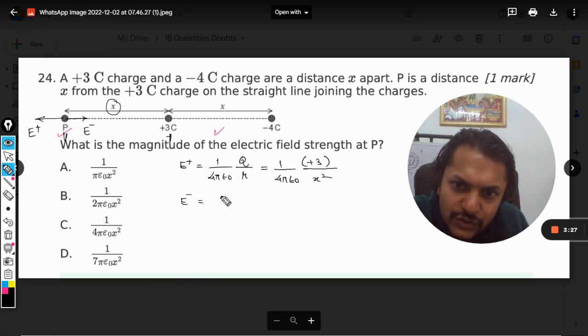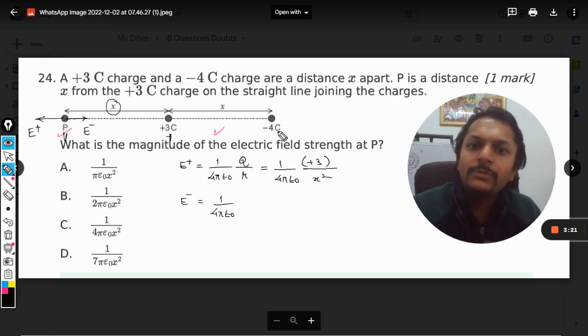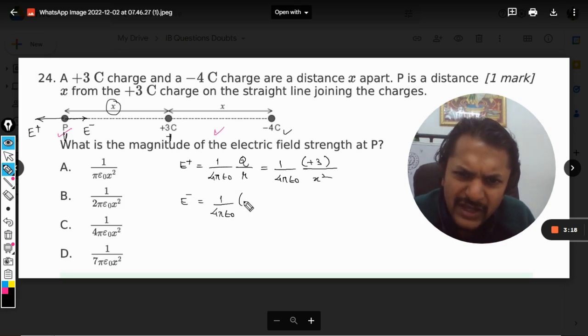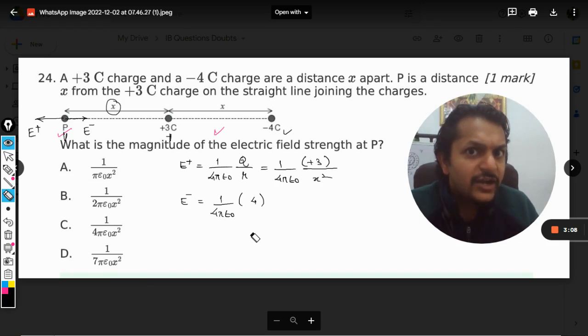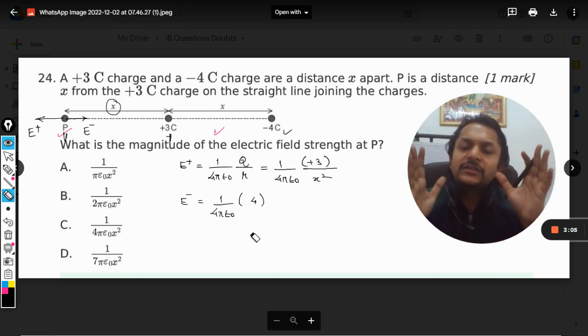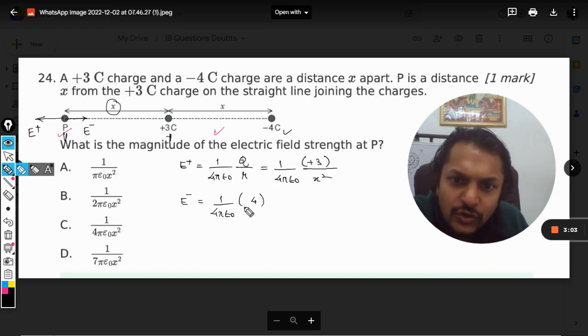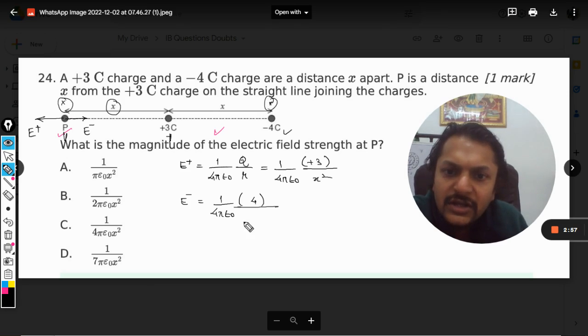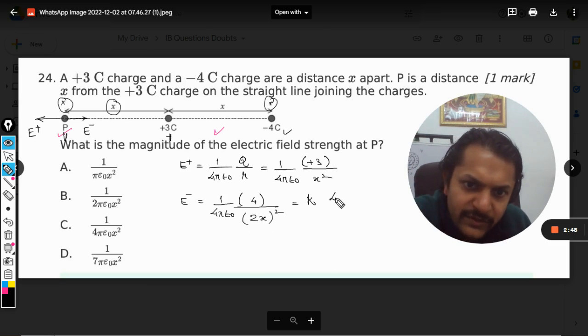For E_negative, similarly it has the same formula, but instead of 3 C, we're considering -4 C. Since electric field strength is a vector quantity, we'll take care of direction separately, so we can just take magnitude here. So it's 4, and the total distance between point P and the charge is 2x. Using the electric force constant k, it becomes k × 4/(2x)² = k/(x²). And E_positive is k × 3/x².